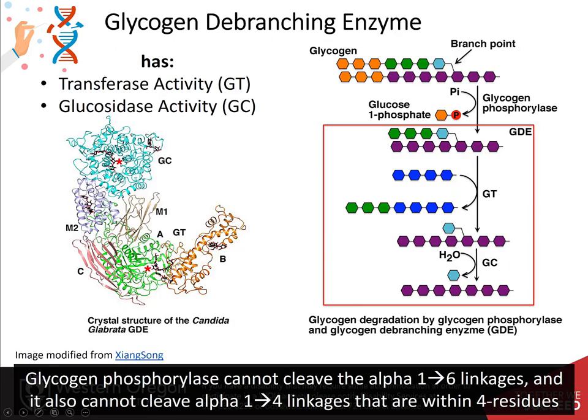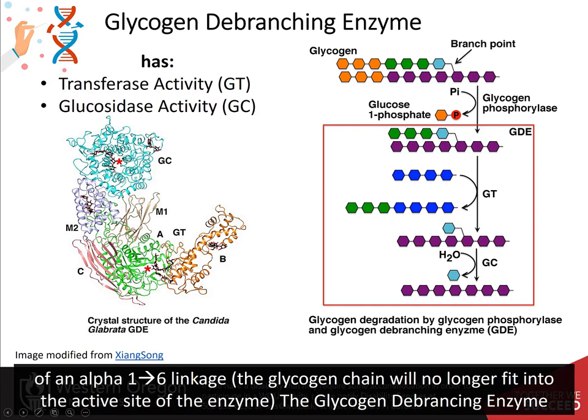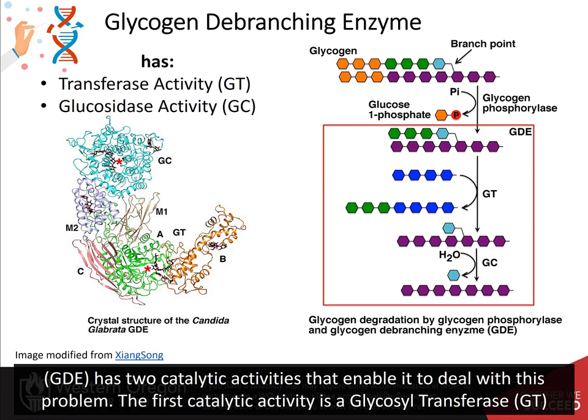Glycogen phosphorylase cannot cleave the alpha-1,6 linkages, and it also cannot cleave alpha-1,4 linkages that are within four residues of an alpha-1,6 linkage, as the glycogen chain will no longer fit into the active site of the enzyme. The glycogen debranching enzyme, GDE, has two catalytic active sites that enable it to deal with this problem.